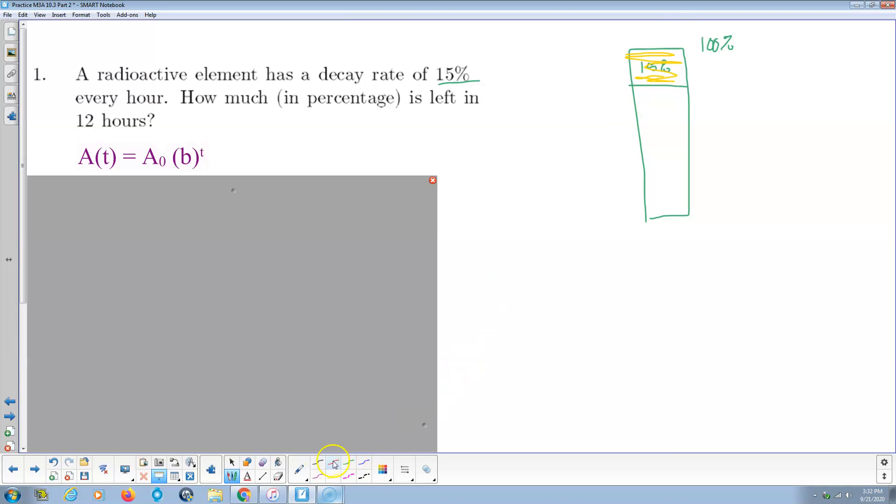It decays at a rate of 15% every hour, so 15% every hour goes away. So boom, that's gone. So 15% goes away. How much is left? Well, 100 minus 15 is 85%. Now this is the new 100% for the second stage of the problem.